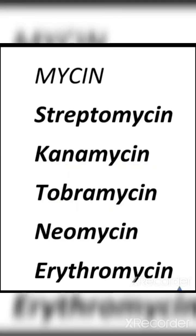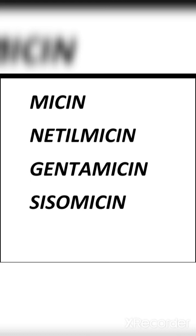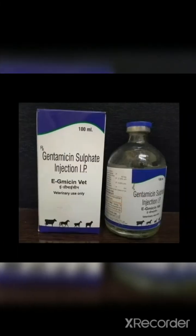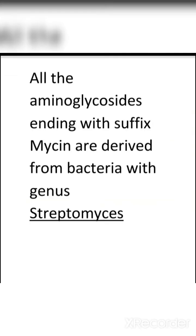Let us look at a few examples. Antibiotics ending with the suffix '-mycin' include streptomycin, kanamycin, tobramycin, neomycin, and erythromycin. The second set of antibiotics ending with '-micin' includes natalimicin, gentamicin, and sisomicin. The difference in spellings is due to a difference in their origins.